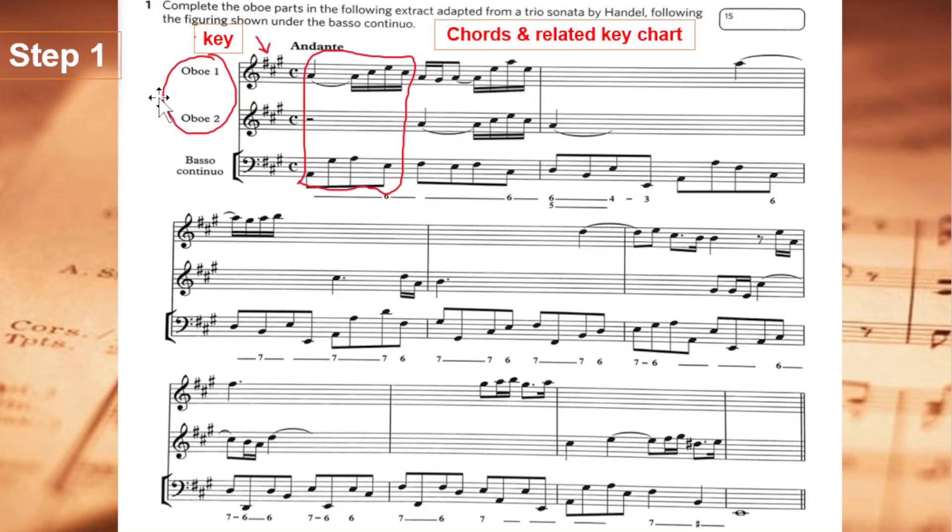This trio sonata is for oboe 1 and oboe 2, plus a basso continuo. According to the key signature and the chord in the first bar, we can confirm this is in A major.